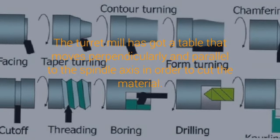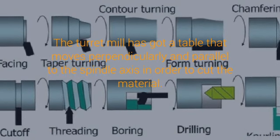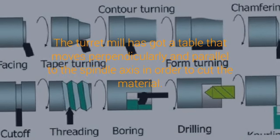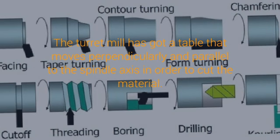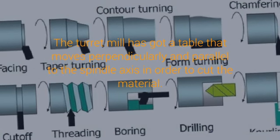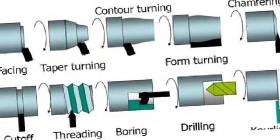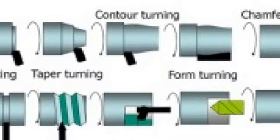Types of milling machines. The two main configurations of the milling machining operations are the vertical mill and the horizontal mill, which are further discussed below.